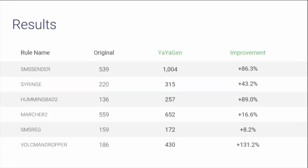Now let's look at the results. I wanted to compare the effectiveness of automatically generated rules with human-written rules. I took some available human-written rules and recreated automatic versions starting from samples they originally detected, testing on a 1.5 million dataset of Android applications collected through 2017. All automatically generated signatures improved the number of detections, ranging from 8% to 131% improvement, with an average of 65% — a huge improvement, and all of that without generating a single false positive.